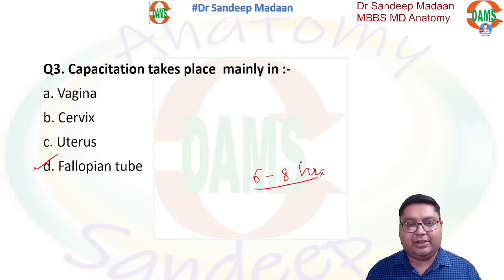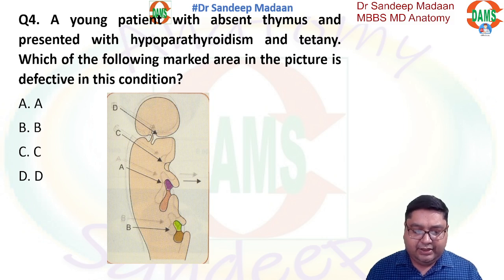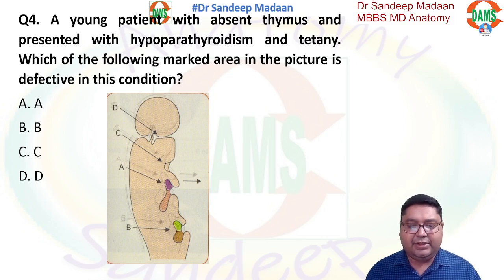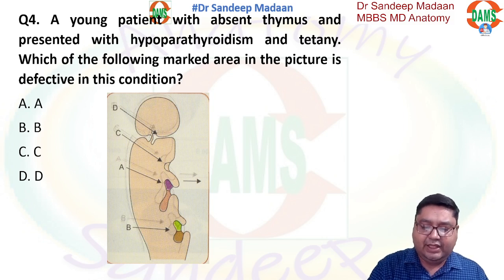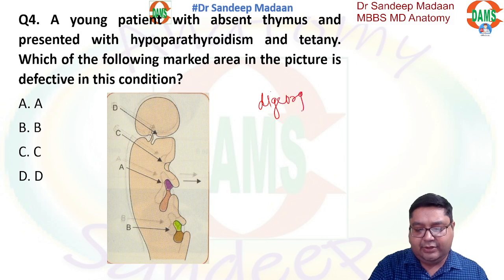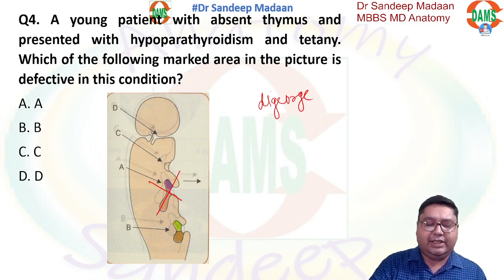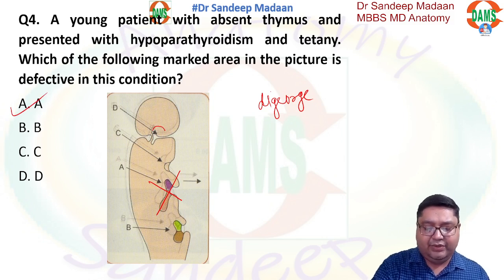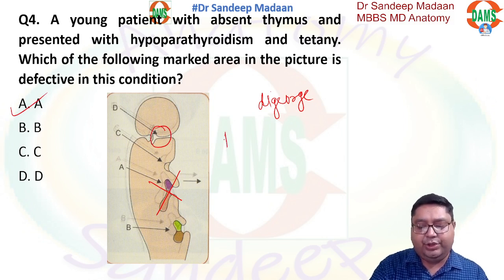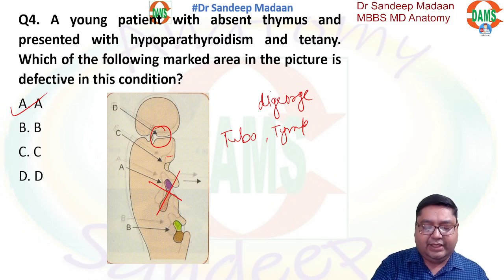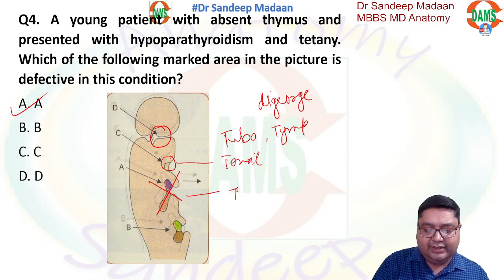In this case the patient has absent thymus and hypoparathyroidism — this is DiGeorge syndrome. In this syndrome the third pharyngeal pouch is not working. The third pharyngeal pouch is where the thymus is made and where part of the parathyroid is made, so A will be the answer. From the first pouch we get the tubotympanic recess — the auditory tube and tympanic cavity (middle ear). From the second pouch we get the tonsil, and from the third pouch we get the thymus.